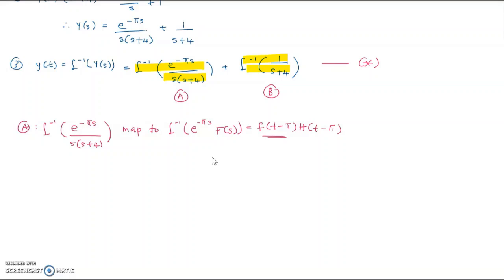Our a is π and F(s) is 1 over s(s+4). The answer takes the form f(t minus π)·H(t minus π). To find f(t minus π), first find f(t), which is the inverse of 1 over s(s+4). This requires partial fractions.